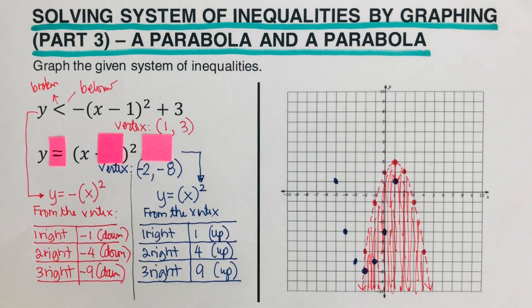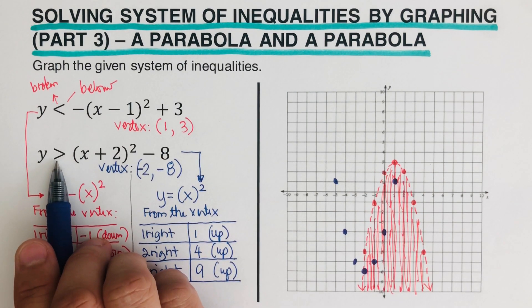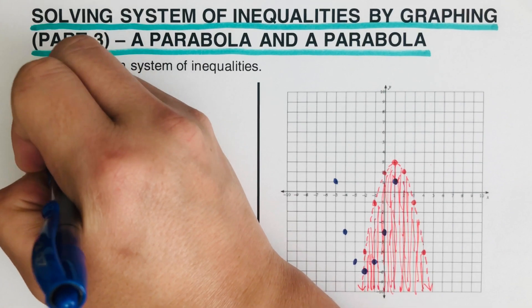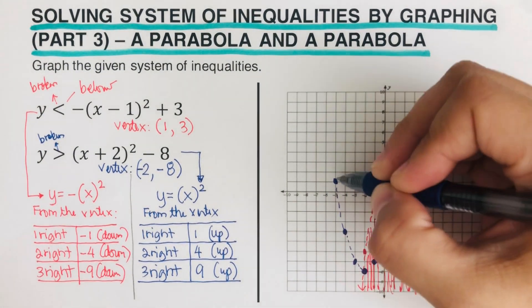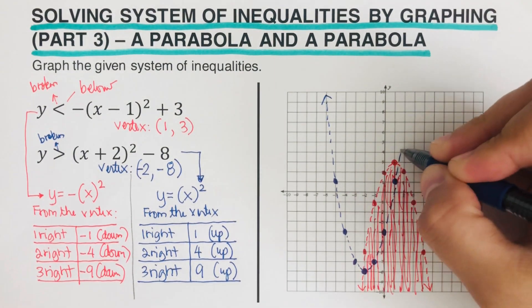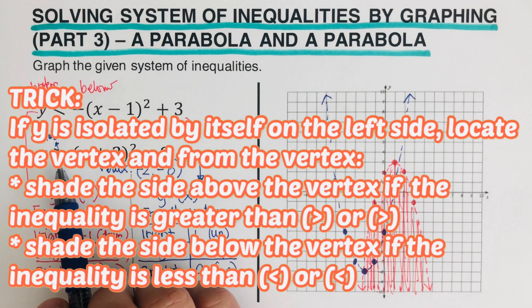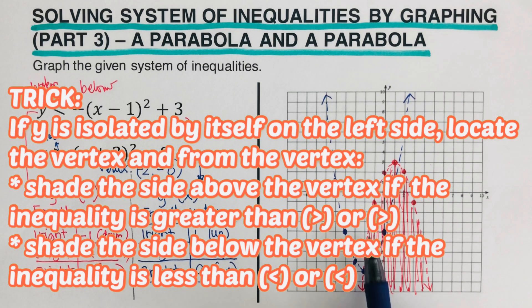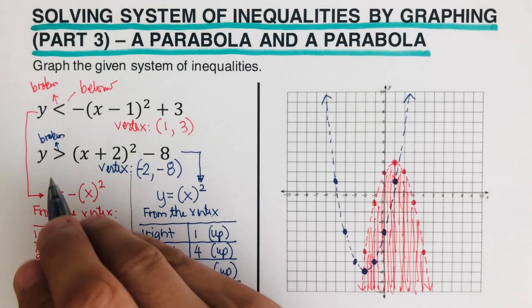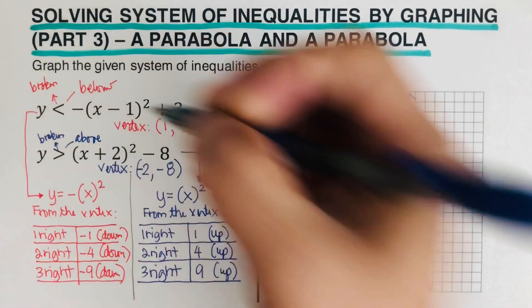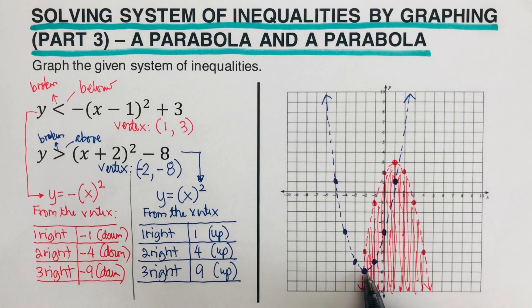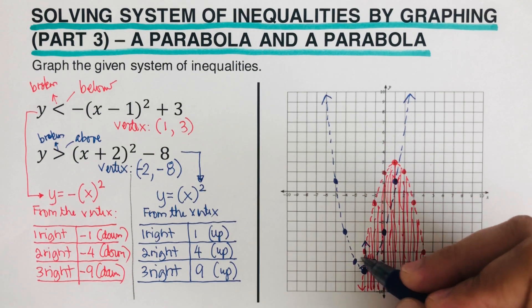We determine whether to use a solid line or a broken line. Again, since there is no bar underneath, we use a broken line. After creating the broken line, we shade. The trick: if Y is isolated on the left side, locate the vertex. Shade above the vertex if it's greater than or greater than or equal to; shade below if it's less than or less than or equal to. Since this one is greater than, we are shading above the vertex.